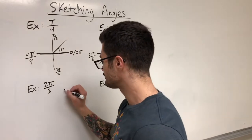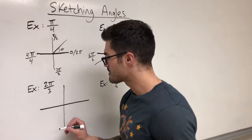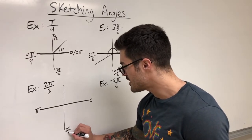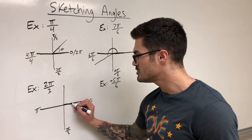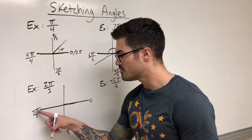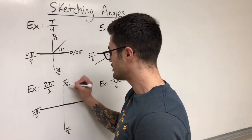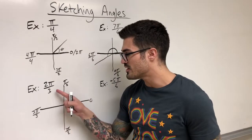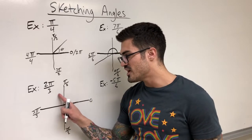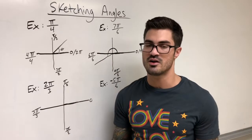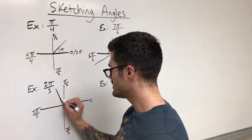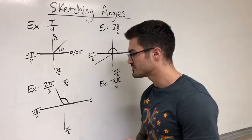Next example: two pi over three. Drawing my y-axis and x-axis. Pi can be written as three pi over three, so two pi over three is definitely before pi. To compare with pi over two, I find a common denominator of six: pi over two becomes three pi over six, and two pi over three becomes four pi over six. So the angle is somewhere in the second quadrant. The terminal side lands in here — this is the angle opening from the initial side to the terminal side in quadrant two.